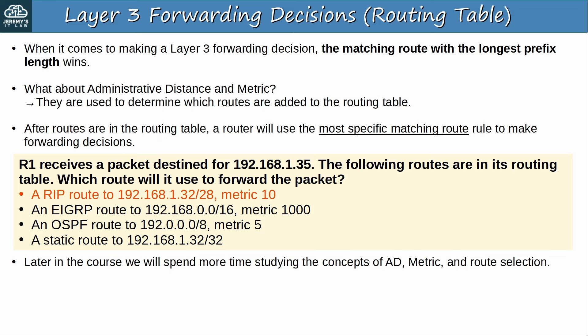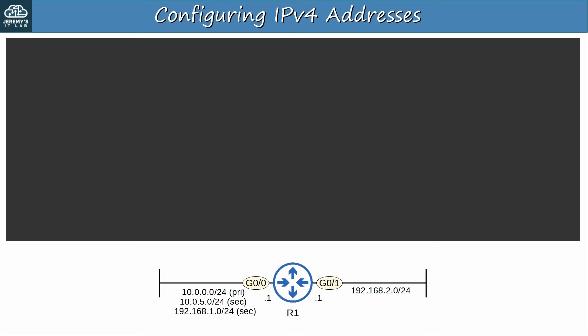Later in the course we will spend more time studying the concepts of AD, metric, and route selection when we look at each routing protocol in detail. In this video I just wanted to clarify some concepts already studied in the CCNA. It's absolutely essential that you understand how a router decides which routes to insert into the routing table, and how it decides which route to use to forward each packet. Now let's look at how to configure IPv4 addresses — something you already know, but I'll add some extra details. Notice in the diagram that R1's G0/0 interface is part of multiple subnets, which is something new I'll mention.